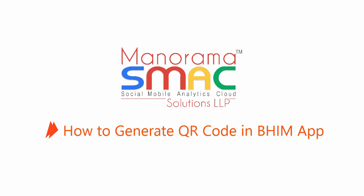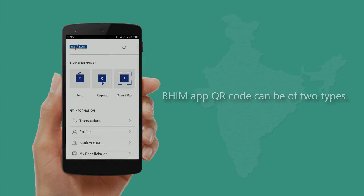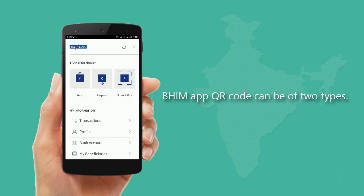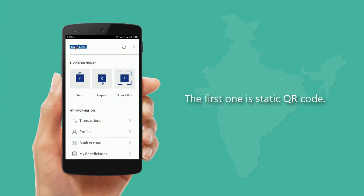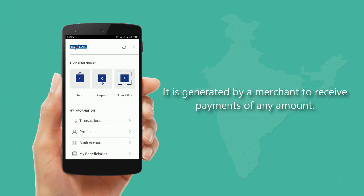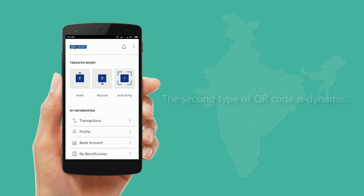This video explains how to generate a QR code in the Beam app. Beam app QR codes can be of two types. The first one is a static QR code, which is generated by a merchant to receive payments of any amount.